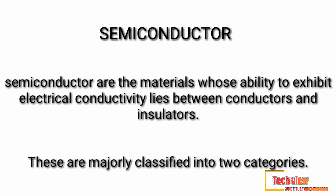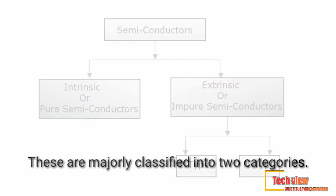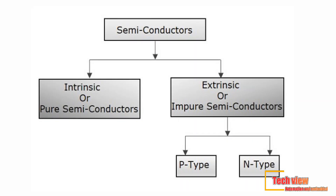Semiconductors are classified into two types: intrinsic semiconductors and extrinsic semiconductors. Further, extrinsic semiconductors are classified into n-type and p-type.